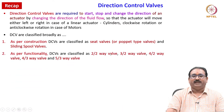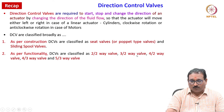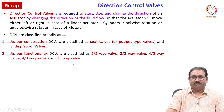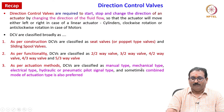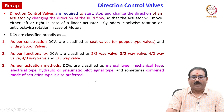As per functionality, DCVs are classified as 2/2 DCV, 3/2 way valve, 4/2 way valve, 4/3 way valve and 5/3 way valve. As per the actuation method of the spool, DCVs are classified as manual type, mechanical type, electrical type, hydraulic or pneumatic pilot signal type, and sometimes a combined mode of actuation is also preferred.